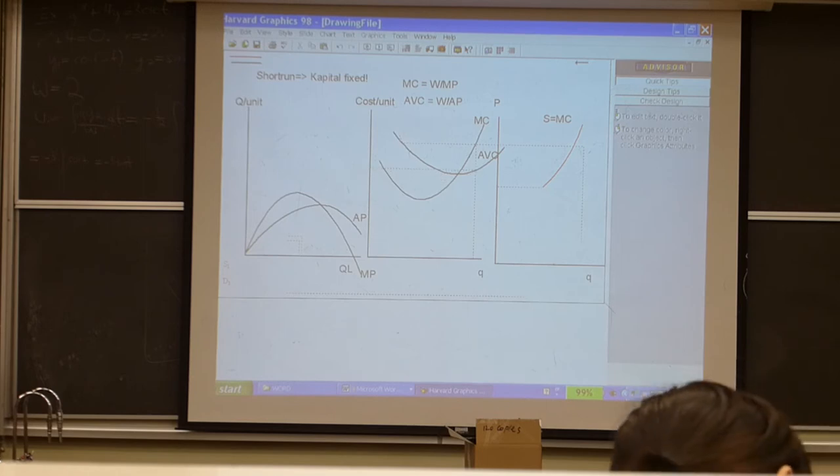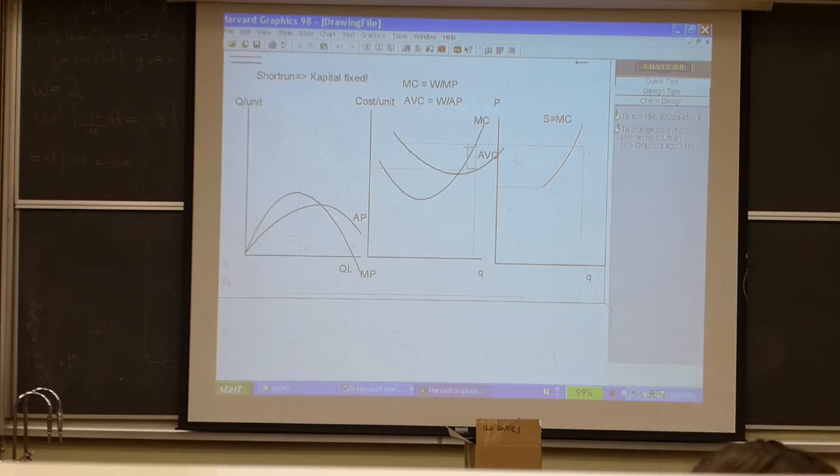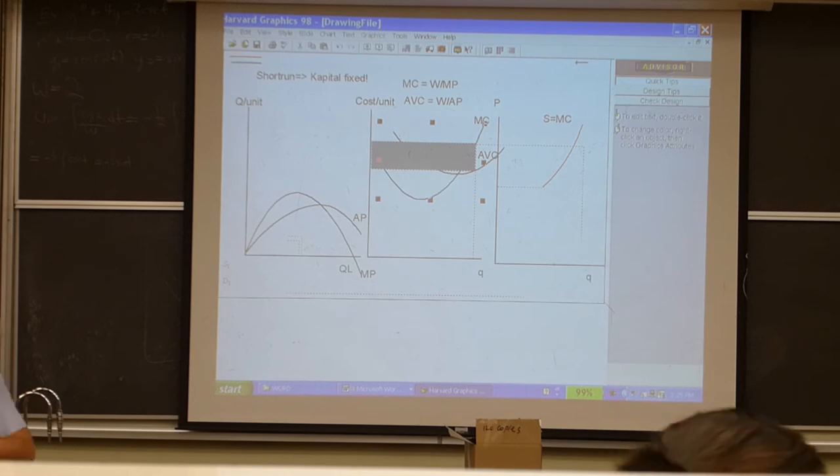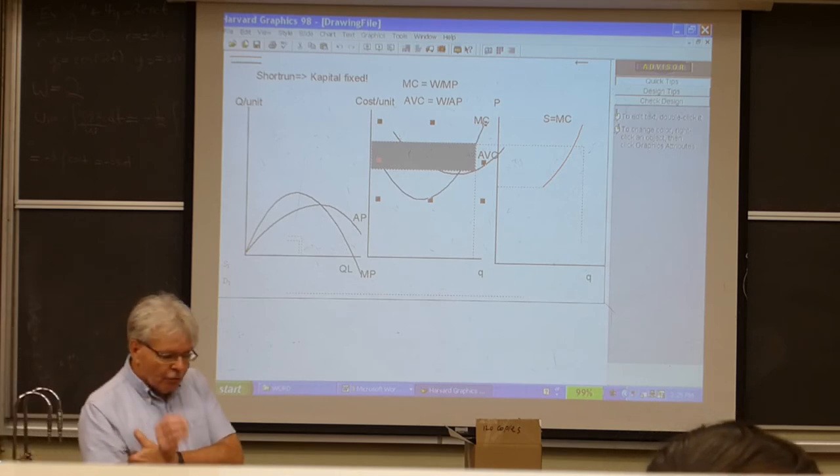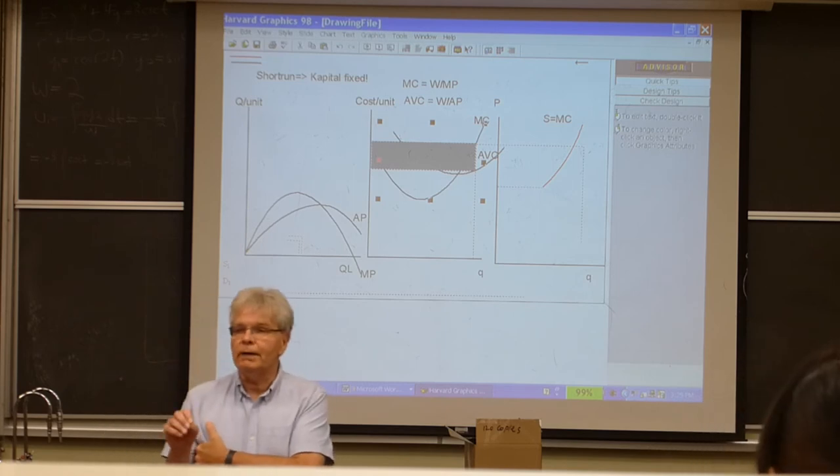What you do not want to do, and by the way many will do, and on this exam I can probably know that half the class will do this unless they're paying attention: this is not the average cost at that output, because that's the average cost at this output. The average cost at that output is right there. So the economic profit is this area, which must be drawn carefully and correctly.